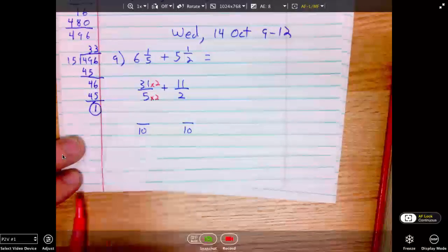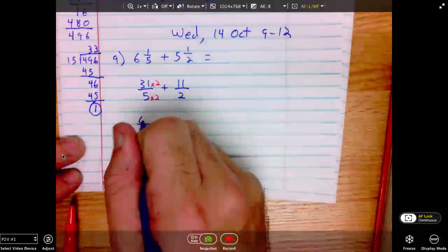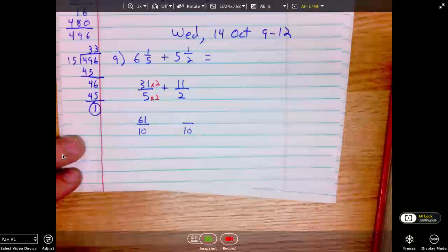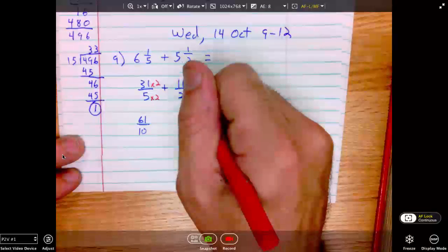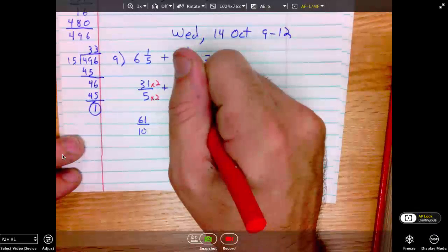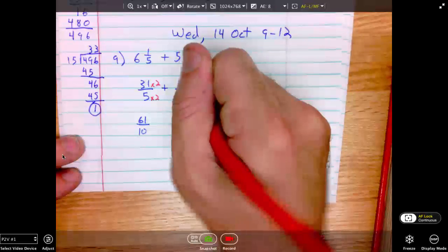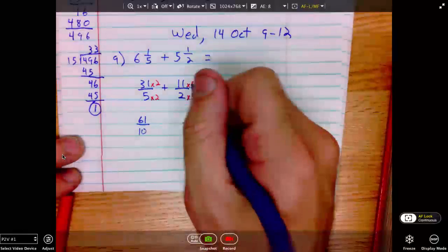31 times 2 will be 62. 2 times what is 10? Times 5. So, multiplying the numerator by that as well. 11 times 5 is 55.